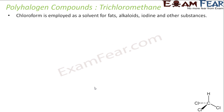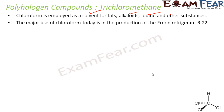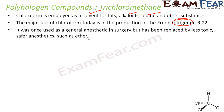Next, trichloromethane, or chloroform. This is also harmful. It is employed as a solvent for fats, alkaloids, iodine, and other substances. The formula is CHCl3. It is used as a refrigerant. It was earlier used as an anesthetic in surgery, but since it is toxic, it has been replaced by less toxic anesthetics such as ether.